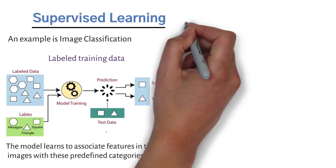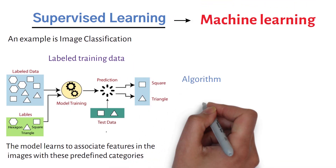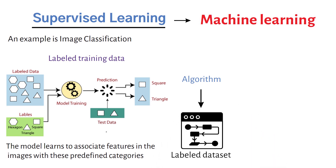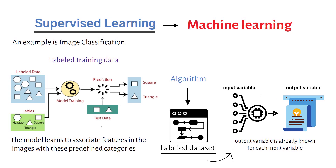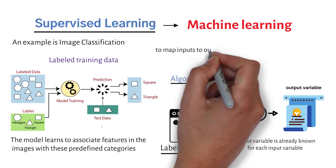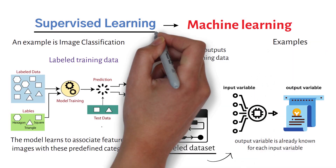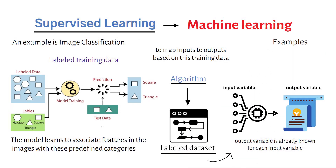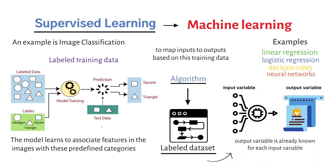Supervised learning is one of the most common types of machine learning, where the algorithm is trained on a labeled dataset. In a labeled dataset, the output variable is already known for each input variable, and the algorithm learns to map inputs to outputs based on this training data. Examples of supervised learning algorithms include linear regression, logistic regression, decision trees, and neural networks.